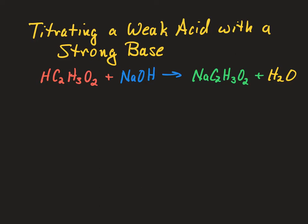Now let's consider what will happen if we titrate a weak acid like acetic acid with a strong base like sodium hydroxide. Here is our equation: acetic acid reacts with sodium hydroxide. Our product is sodium acetate, that's our salt, plus water.